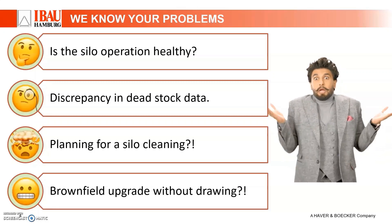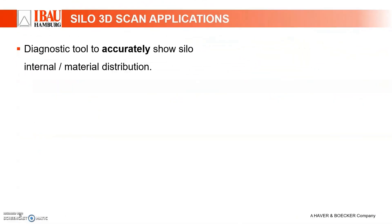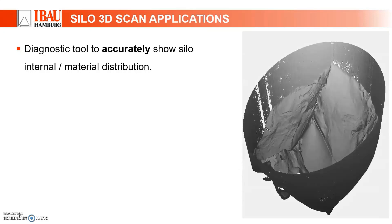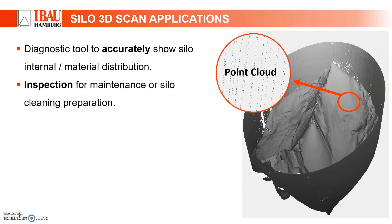I will show you how we can provide solutions with our SiloScan service. First, the 3D scan is a diagnostic tool to accurately show the silo internal and material distribution. The image you see is a 3D scan of a cement silo. If we zoom into this area, you can see this image is made up of tiny points — millions of these tiny points form a point cloud.